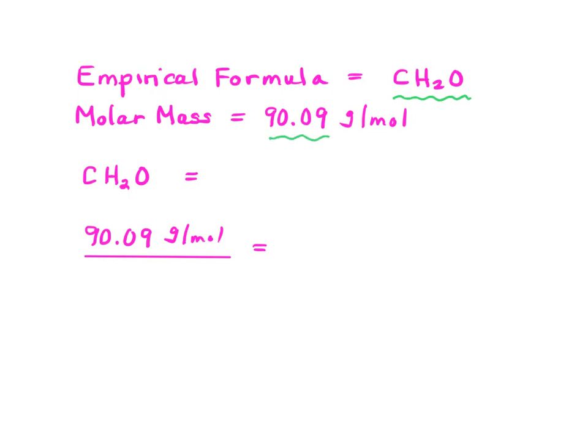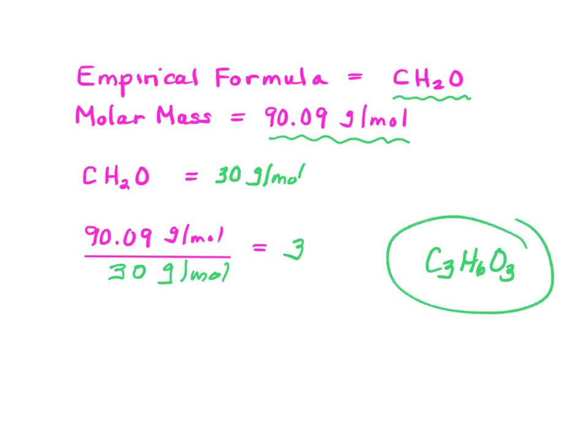In the problem, they told us the molar mass was 90.09. So I look at the CH2O, and I have to figure out how much that weighs. So 12 and 2 is 14 and 16. This weighs about 30. So the 90 over the 30 gives us 3. So the molecular formula of lactic acid is C3H6O3. And you're all done.